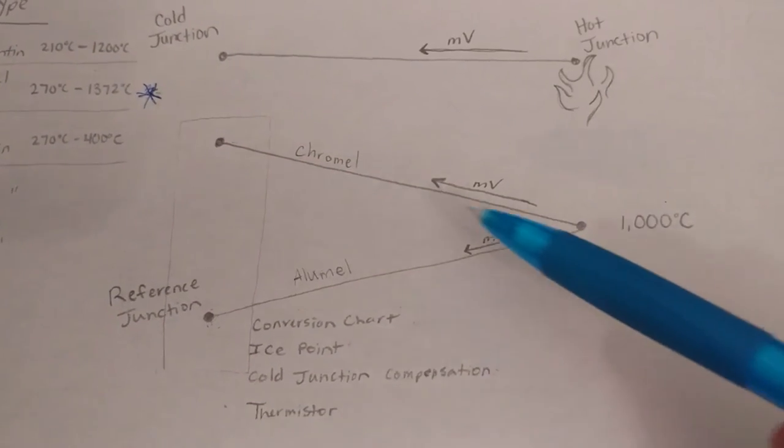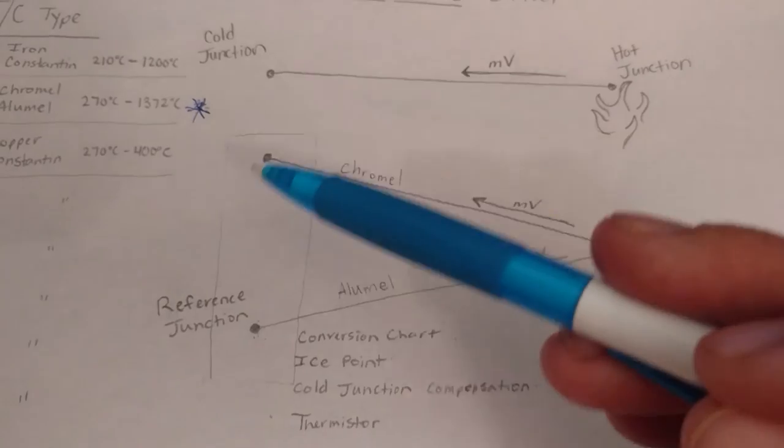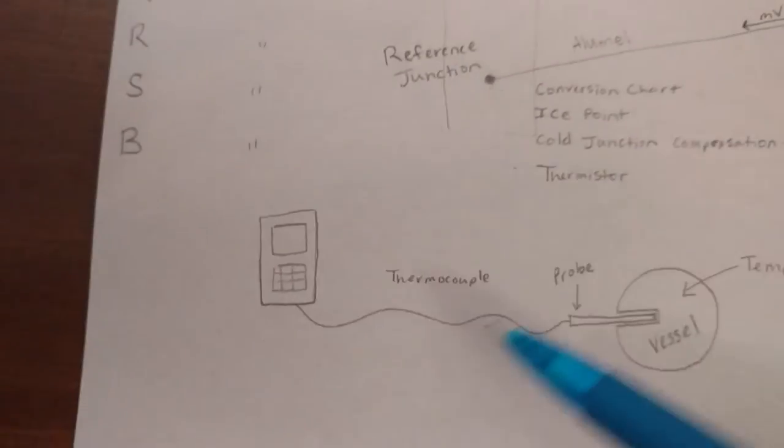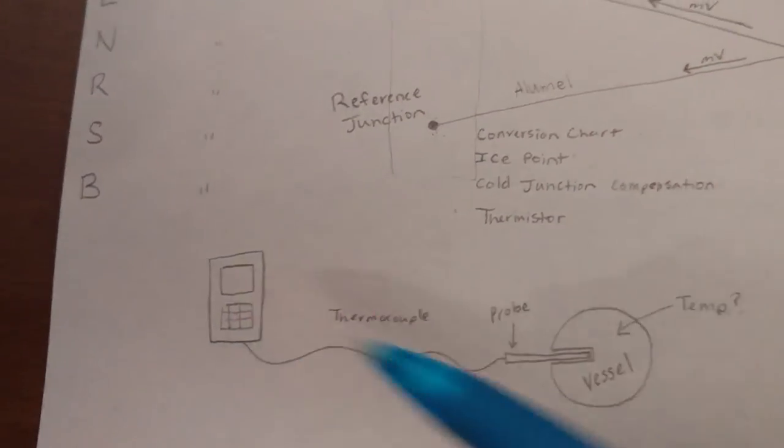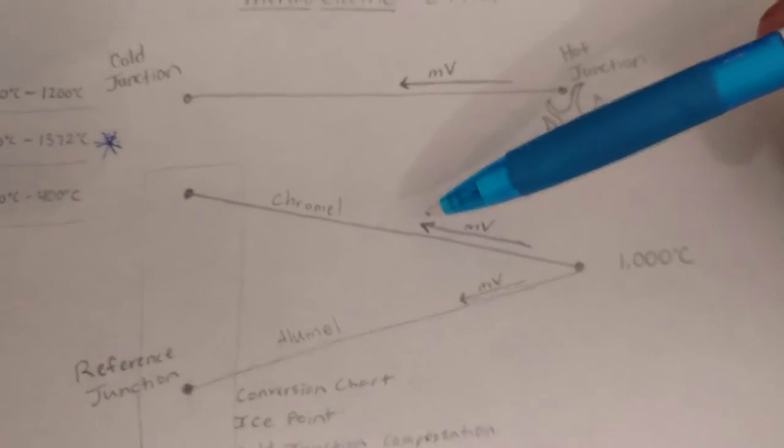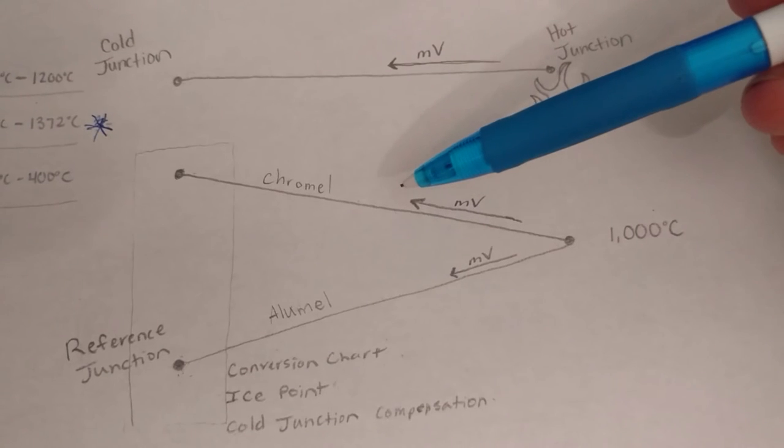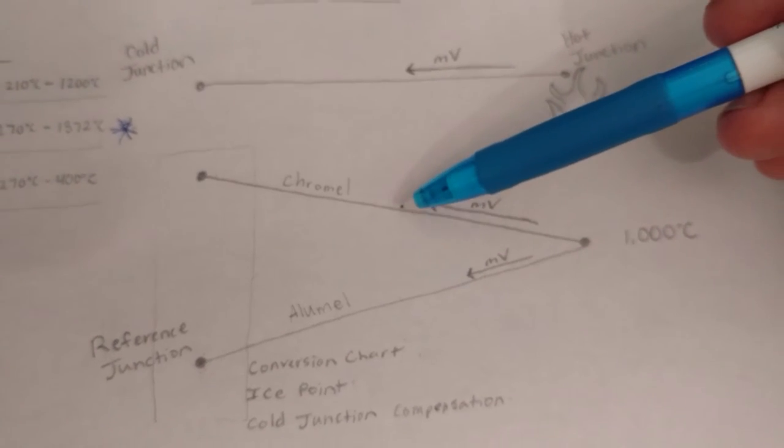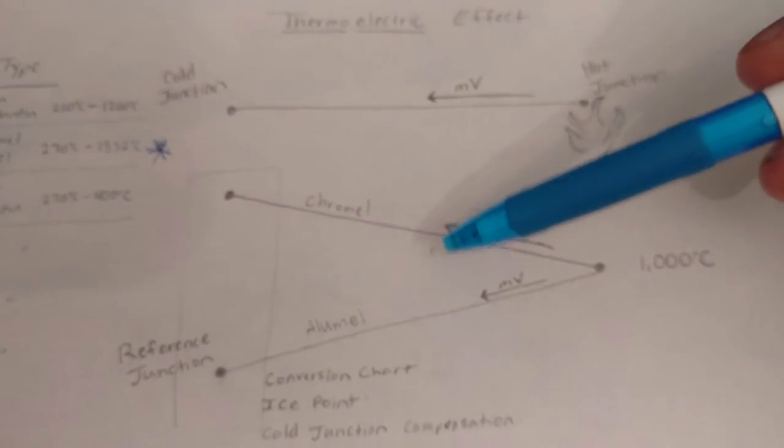The other side of our thermocouple is going to be connected to our device, like a Fluke. And what it's going to do is take into account the difference in millivolts produced in this wire and in this wire.